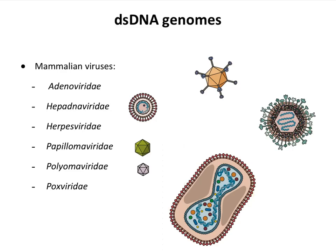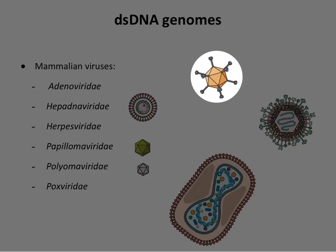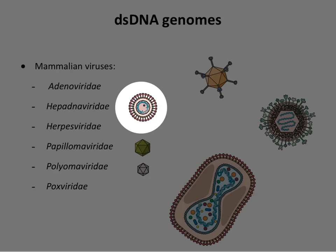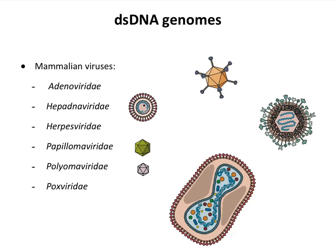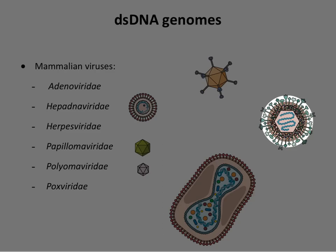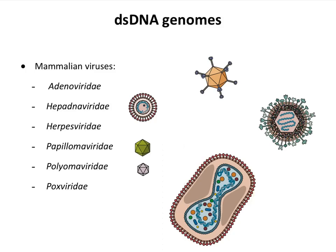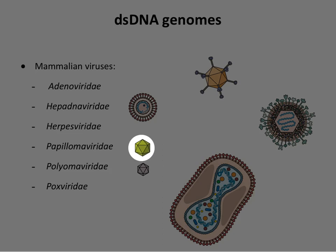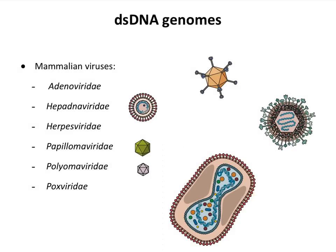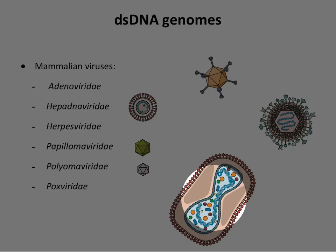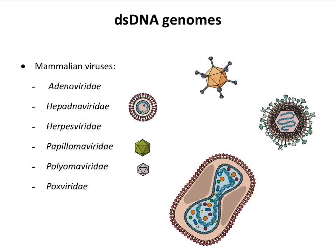Adenoviruses — this looks like a satellite, with a very interesting virion with these projections. Hepatitis B virus. These are all family names — adenoviridae means it's a family, capitalized and italicized. Herpes viruses are quite large with a lot of seemingly junk between the membrane and the capsid. Papillomaviruses cause warts. Polyomaviruses can affect many different animals including us, and most don't seem to cause anything. And finally, pox viruses, which are quite large and complicated. Mimivviruses are bigger, but we don't know much about them.